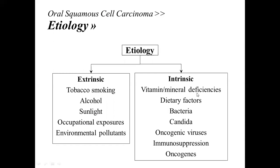For intrinsic etiology, we have vitamin or mineral deficiencies, dietary factors, bacteria, candida, oncogenic viruses, immunosuppression, and oncogenes. Intrinsic means these happen inside the body — sometimes deficiencies in vitamins and minerals become chronic and can cause inflammation leading to squamous cell carcinoma. Importantly, oncogenes here are not the same as inherited genes; these are genes that we already have but underwent mutation.